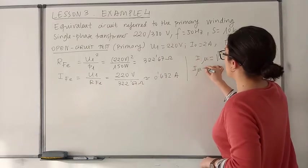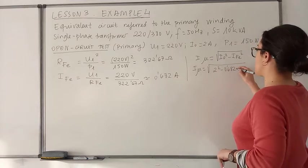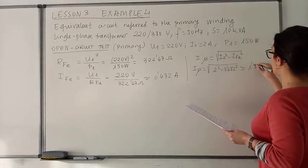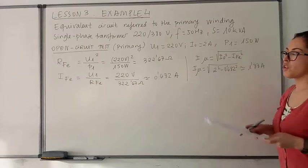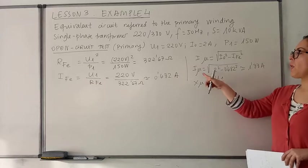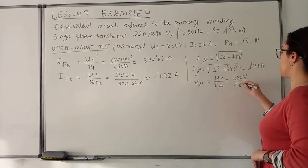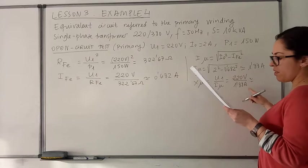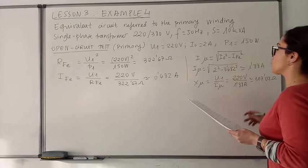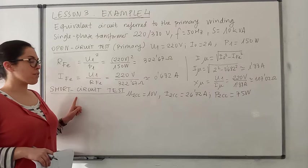That gives a value for the magnetizing current of the square root of 2² minus 0.682², which gives an approximate value of 1.88 A. So the magnetizing reactance will be the voltage in the primary winding divided by the magnetizing current, that is 220 V divided by 1.88 A, which gives an approximate result of 117.02 ohms.